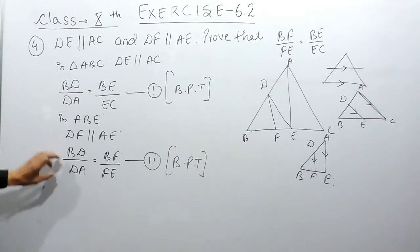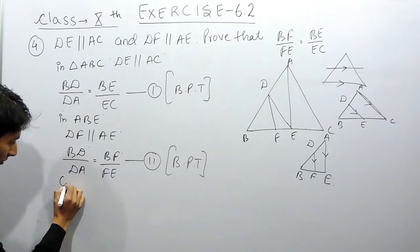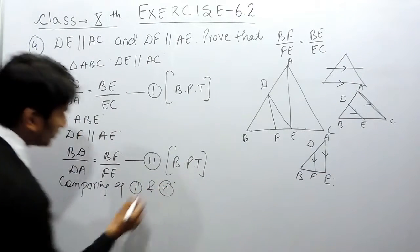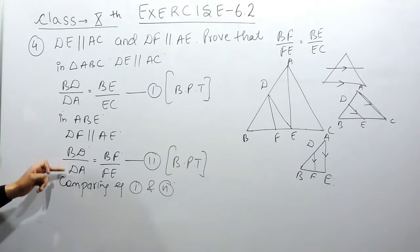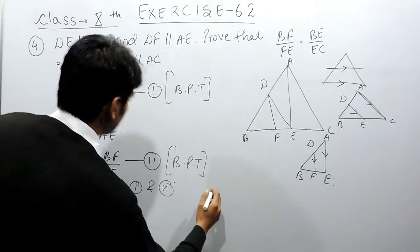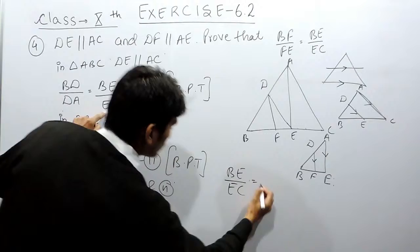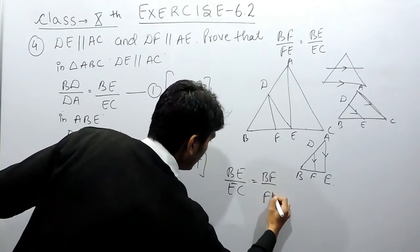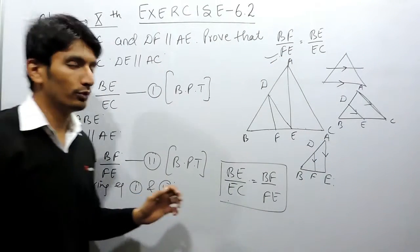Now we have two equations, and comparing these two equations will get our desired answer. Comparing equation one and equation two: in both equations, the left-hand sides are equal — this is BD upon DA, and this is again BD upon DA. So if the left-hand sides are equal, clearly the right-hand sides must also be equal. Therefore we can say that BE upon EC must be equal to BF upon FE. So this is our required answer, and this is how you can prove this question.